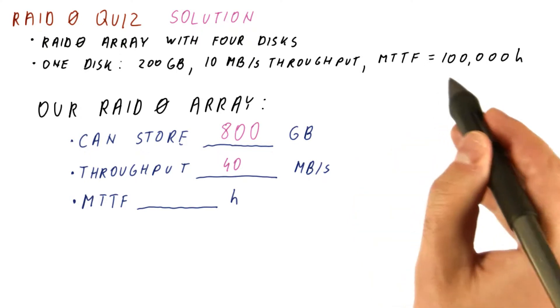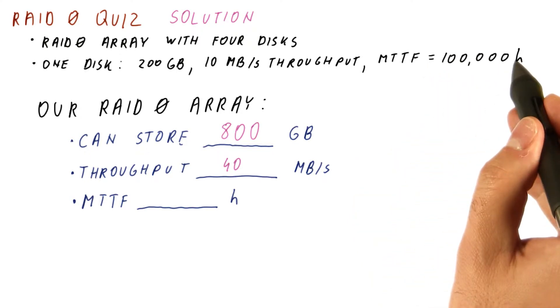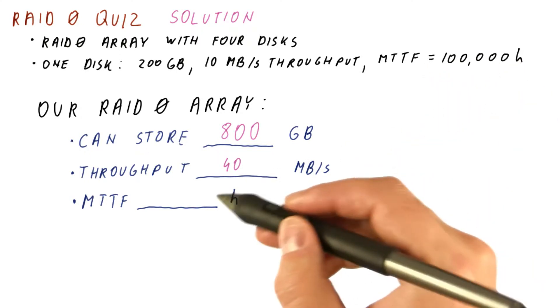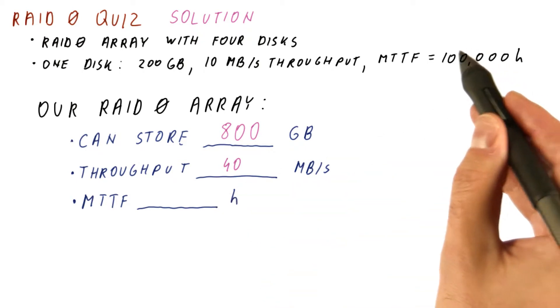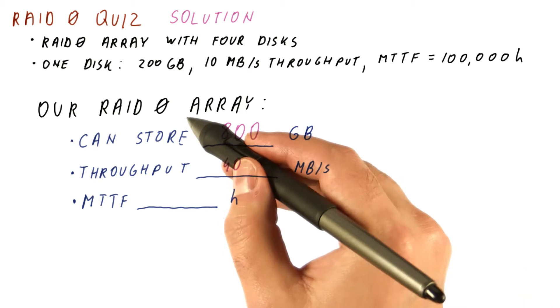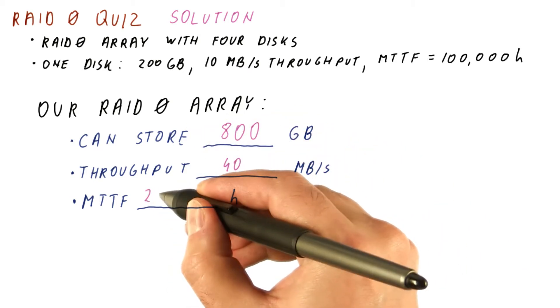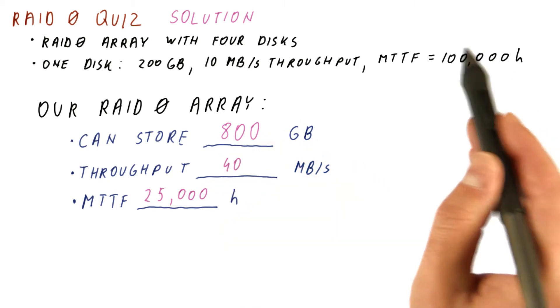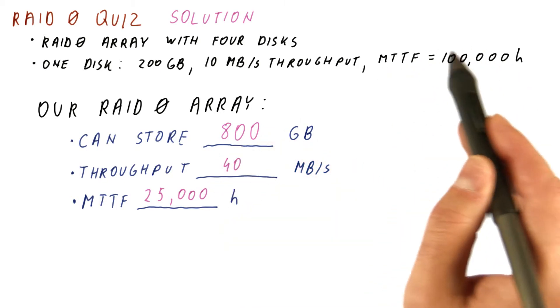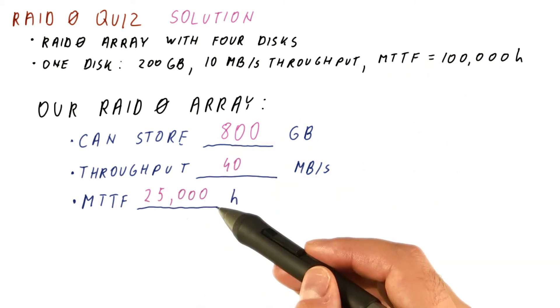And finally, if the MTTF for one disk is 100,000 hours, the expected MTTF for the whole array is going to be a quarter of this, if they are in RAID 0. So we will get 25,000 hours. This MTTF ends up being almost 12 years. This one is almost three years.